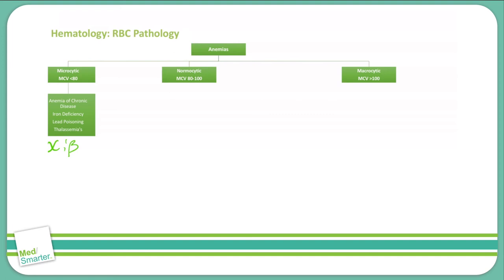Moving on to normocytic. Normocytic is actually broken down into two further groups. It is in non-hemolytic anemias, where you see a low reticulocyte index, and then a hemolytic normocytic anemia, where you have an elevated reticulocyte index.